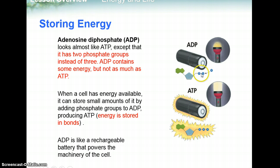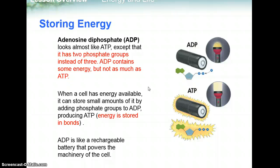ADP has only two phosphate bonds as opposed to the three phosphate bonds in ATP. When a cell has energy available, it can store small amounts of it by adding a phosphate group to ADP to make ATP — going from two phosphates, diphosphate, to triphosphate, or three phosphates. Energy is stored in bonds.